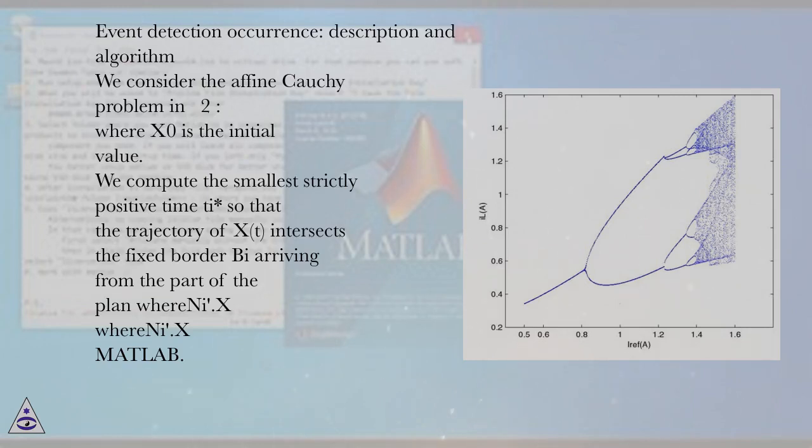Event detection occurrence, description and algorithm. We consider the affine Cauchy problem in R2, where x0 is the initial value. We compute the smallest strictly positive time t so that the trajectory of x(t) intersects the fixed border by arriving from the part of the plan where me apostrophe dot x.